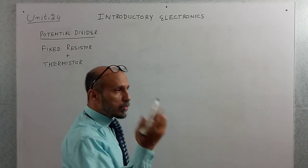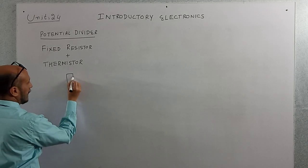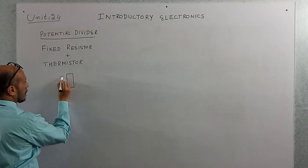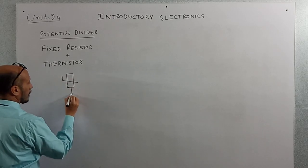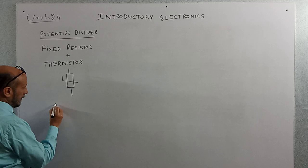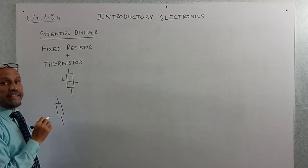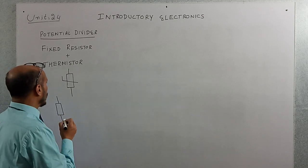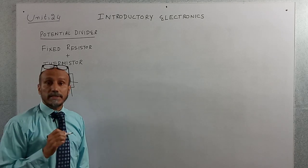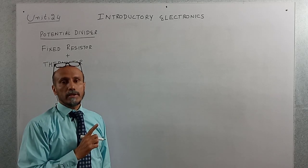First we will see the symbol of the thermistor. This is the symbol of the thermistor, and this was the symbol of the fixed resistor. A thermistor is a specific type of resistor whose value of resistance depends on temperature, but it is inversely proportional to the effect of temperature.